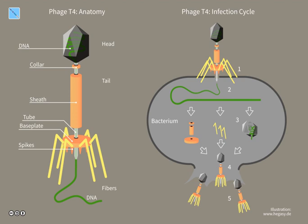In 1896, Ernest Hanbury Hankin reported that something in the waters of the Ganges and Yamuna rivers in India had marked antibacterial action against cholera and could pass through a very fine porcelain filter. In 1915, British bacteriologist Frederick Twort, superintendent of the Brown Institution of London, discovered a small agent that infected and killed bacteria. He believed the agent must be a stage in the life cycle of the bacteria, an enzyme produced by the bacteria themselves, or a virus that grew on and destroyed the bacteria.